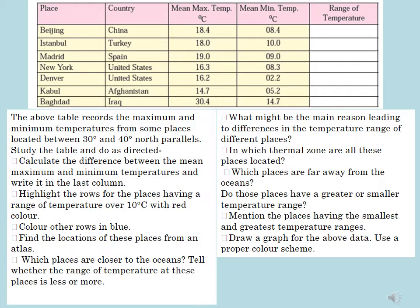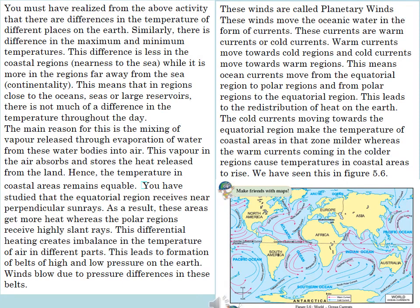First of all, calculate the difference between the mean maximum and mean minimum temperatures and write it in the last column, then solve the rest of the questions. You must have realized from the above activity that there are differences in the temperature of different places on the earth, and similarly there is a difference in the maximum and minimum temperatures.